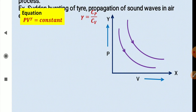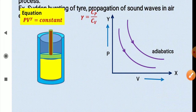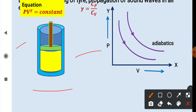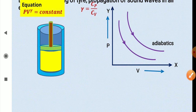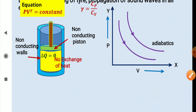Looking at the PV diagram, these curves are called adiabatics. For an adiabatic process there is no exchange of heat between the system and surroundings, so the walls of the cylinder and the piston must be perfectly non-conducting — as in a thermos flask. Since ΔQ = 0, there is no heat exchange at all.